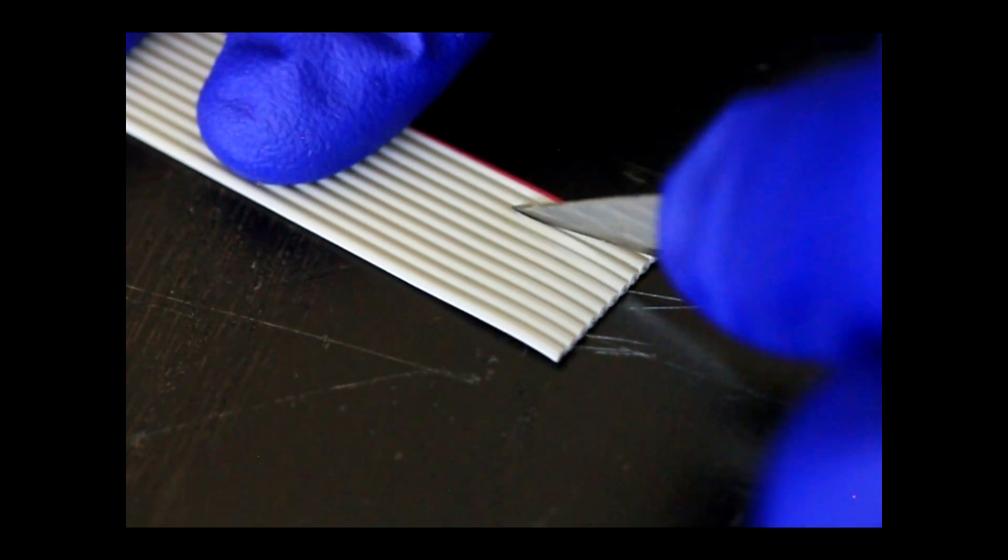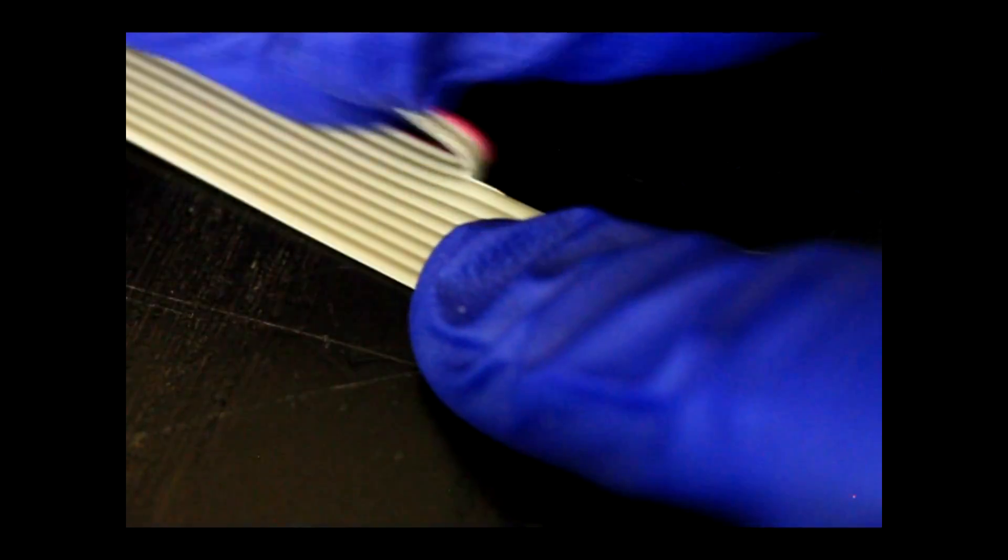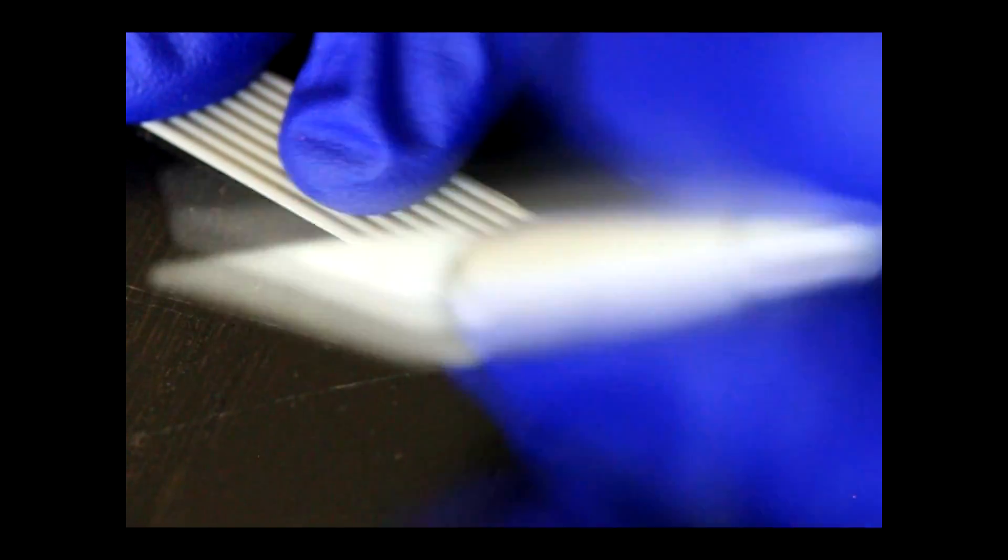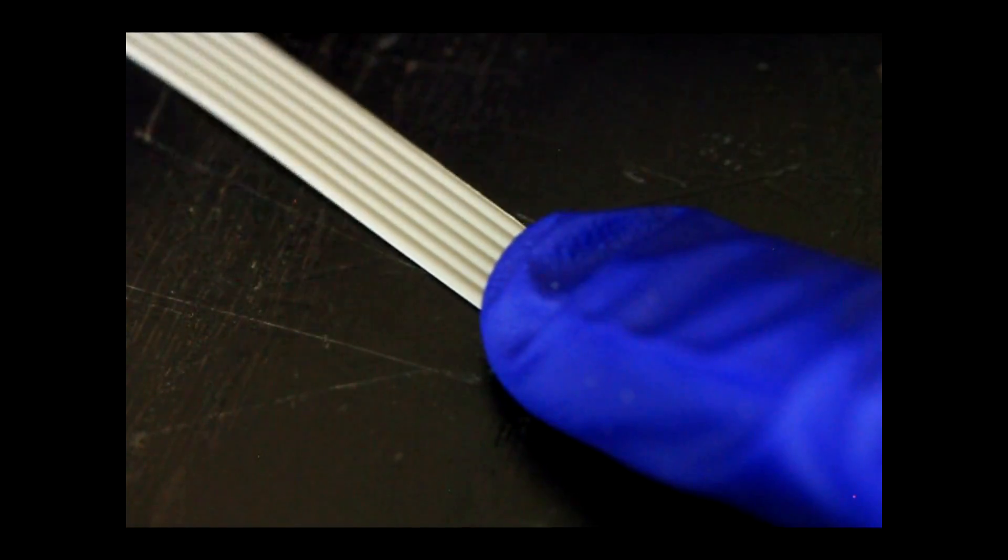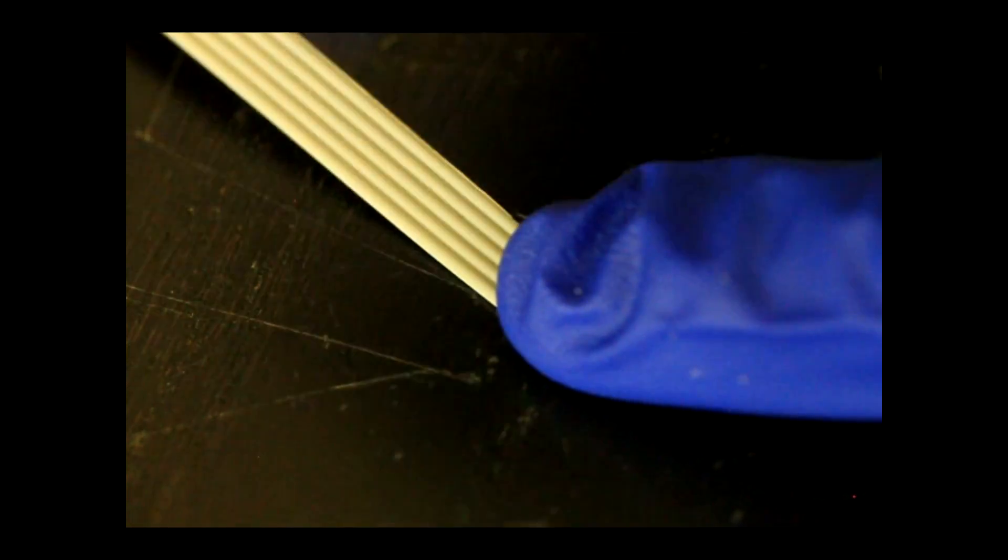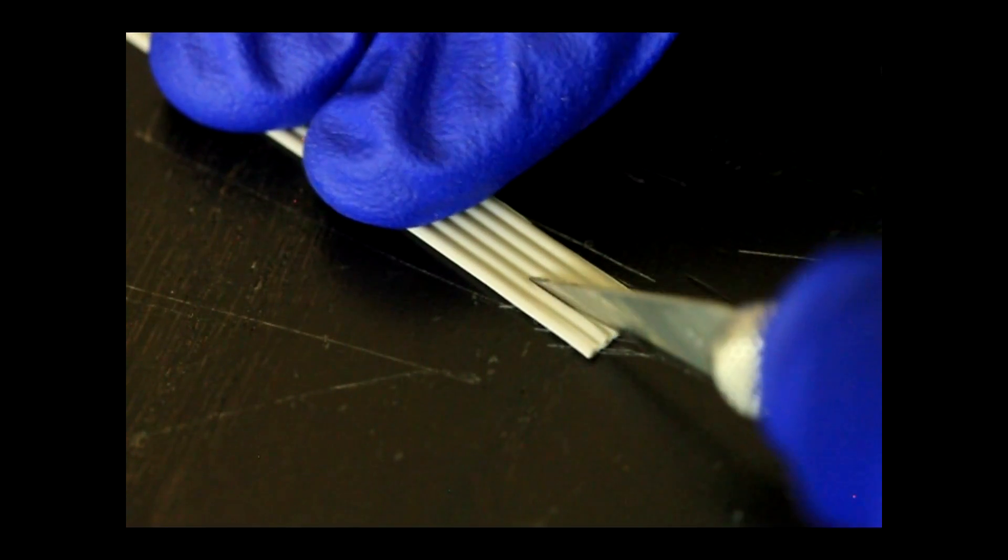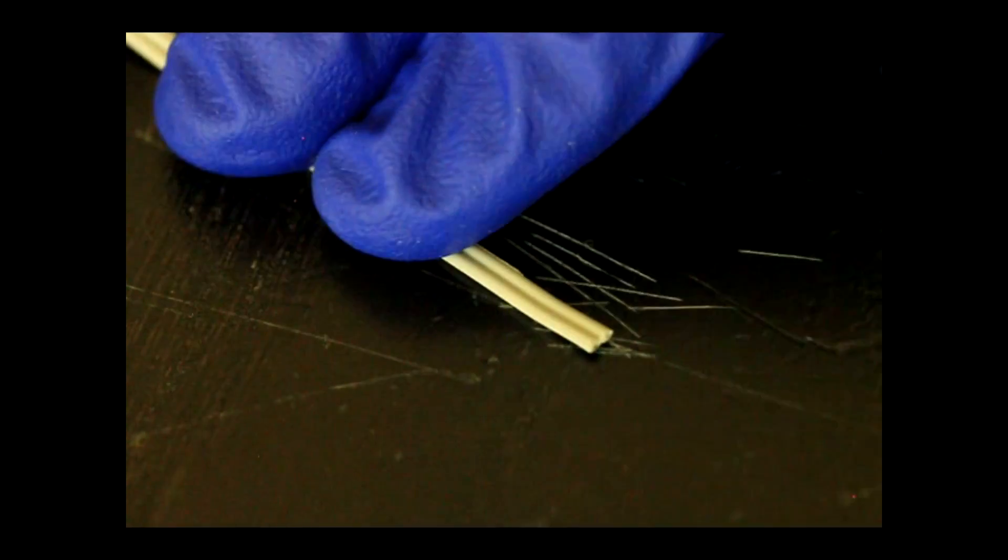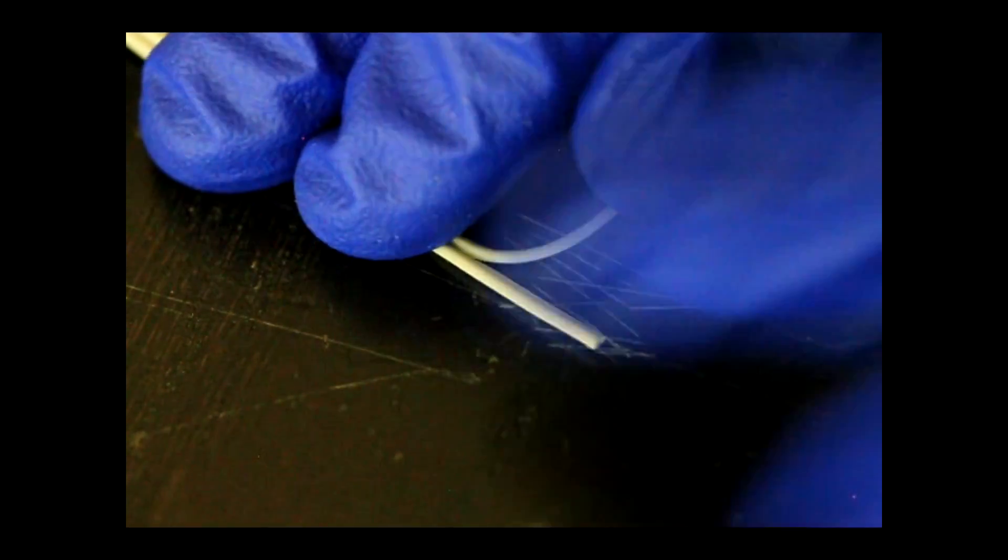Since we only need three of the wires, I'm going to remove the majority of the wires. Using an exacto knife, I'm going to cut and peel back the unnecessary wires. Remember that wire number 1 has a red stripe. The wires that we're keeping are wires number 3, 5 and 9. I'm peeling the wires all the way back to the connector so I can remove those wires using a wire cutter.